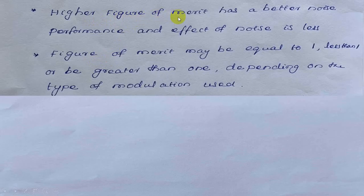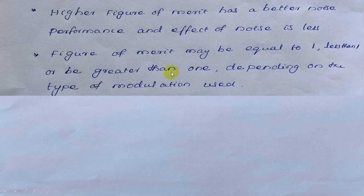Figure of merit is actually the ratio of the output signal to noise ratio to the channel signal to noise ratio. If the figure of merit is higher, then the system has better noise performance and the effect of noise is less. The figure of merit may be equal to 1, less than 1, or greater than 1.